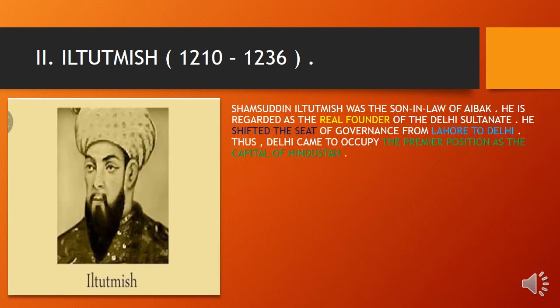Shamsuddin Iltutmish was the son-in-law of Aibak and is regarded as the real founder of the Delhi Sultanate. He shifted the seat of governance from Lahore to Delhi, and thus Delhi came to occupy the premier position as the capital of Hindustan. Today the capital city of India — Delhi — owes this to Iltutmish, who brought the slave dynasty's capital from Lahore to Delhi, a legacy followed even today.